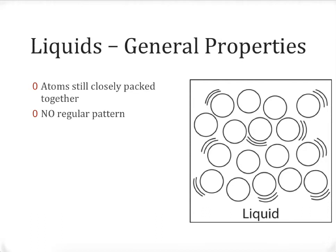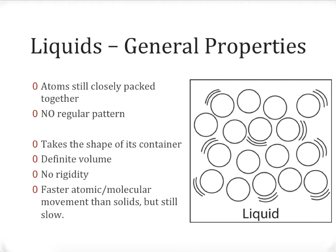With our discussion of solids complete, let's turn our attention to liquids. In liquids, atoms are still generally closely packed together — not quite as close as in solids, but very close. The big difference is that we do not have any of the regular patterns seen in most solids. As a result, liquids don't have a consistent shape; they take the shape of whatever container they're in. Because they're still packed together, we still expect a very definite volume — liquids can't be compressed or spread out. We lose all rigidity, and we see slightly faster molecular movement, though still relatively slow.